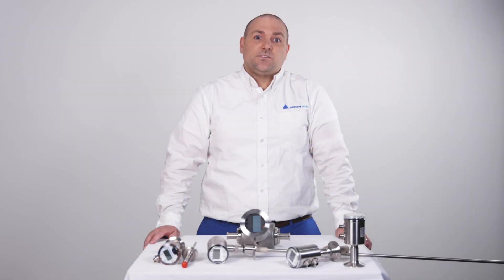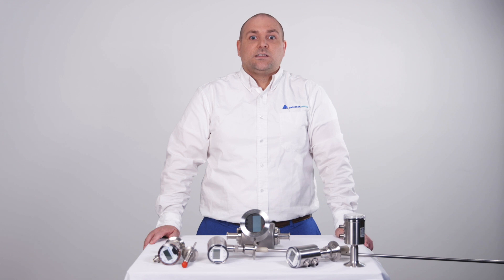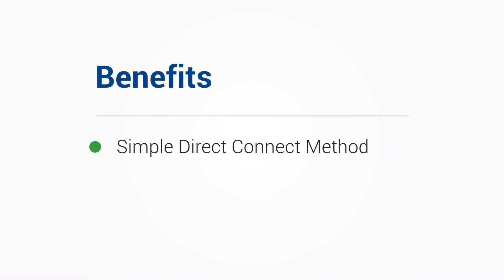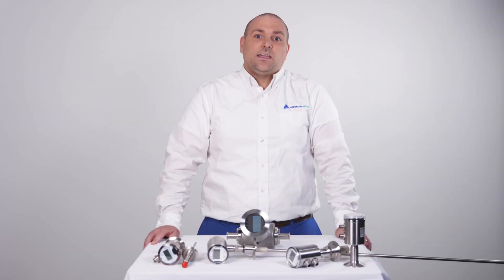As many of you know, IO-Link brings a number of benefits to the process automation space. One of those is the simple direct connect method of having a replacement sensor connect directly to a master, and upload the configuration file directly from the master.